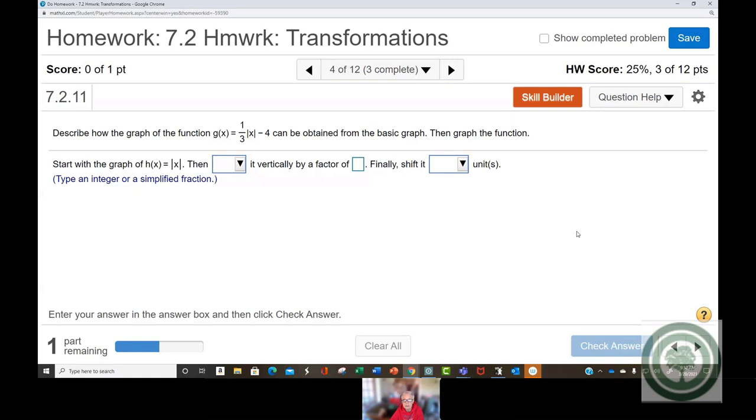See, this is how you're going to do all of it. If you feel very uncomfortable with absolute values, doesn't matter. They tell you what the basic graph is, and then all you have to do is describe the transformations. This is a vertical shrink, and this is a vertical shift down four units.